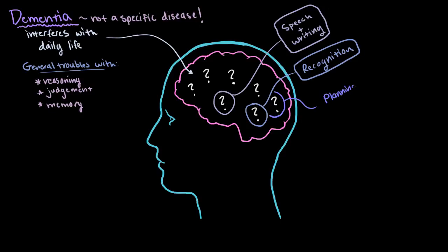Planning and performing tasks that require multiple steps can also be difficult for patients with dementia. Even tasks that you might think are really simple, like getting dressed and eating. These can become a serious challenge for patients with later stage dementia.